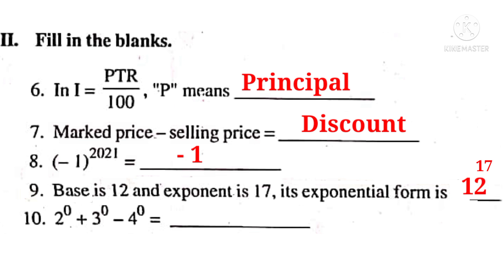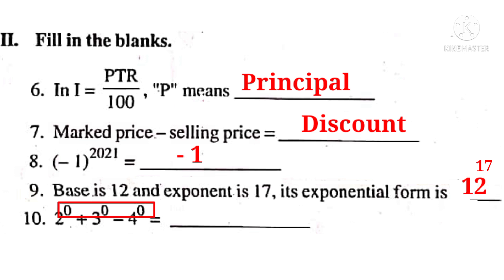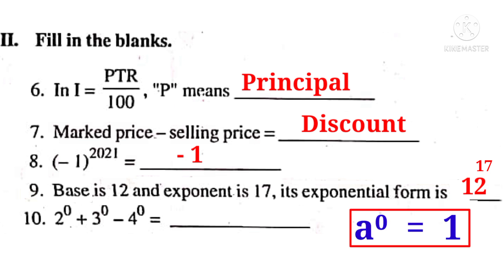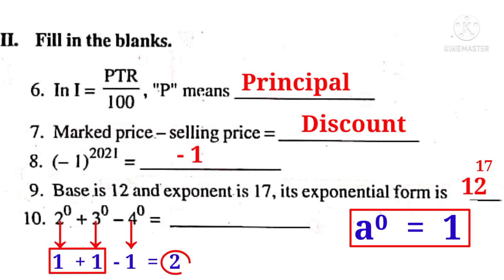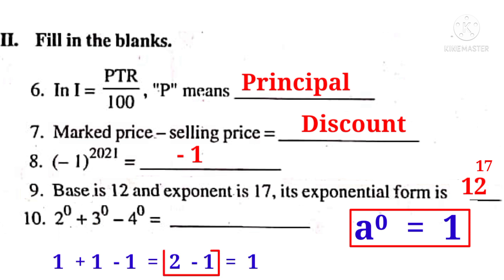Number 10: 2 power 0 plus 3 power 0 minus 4 power 0. Observe that 2, 3, and 4 are different bases and all powers are equal to 0. We know that A power 0 equals 1, where A is any integer except 0. So all values become 1, and 1 plus 1 minus 1 equals 1.